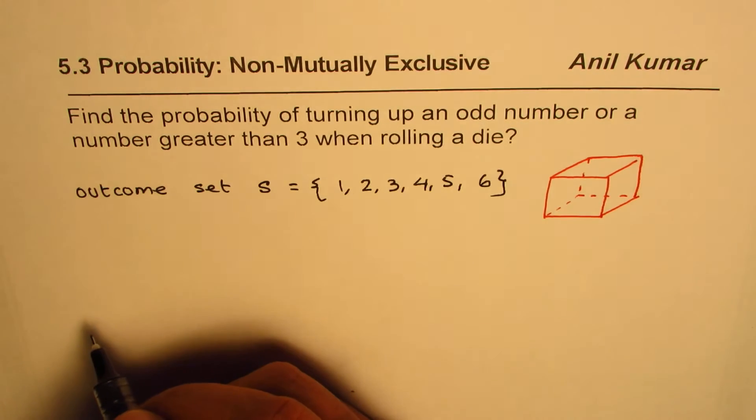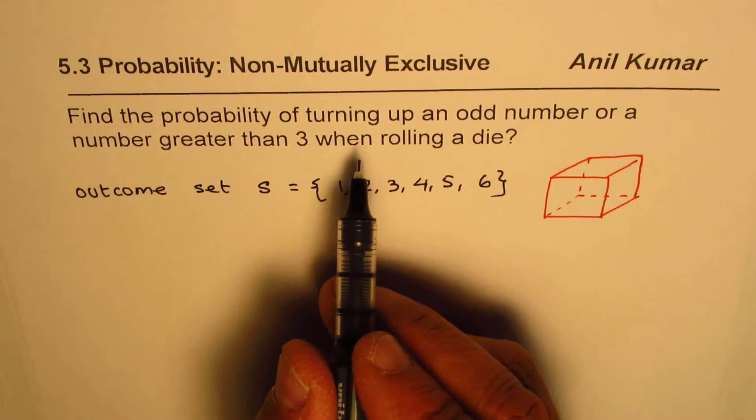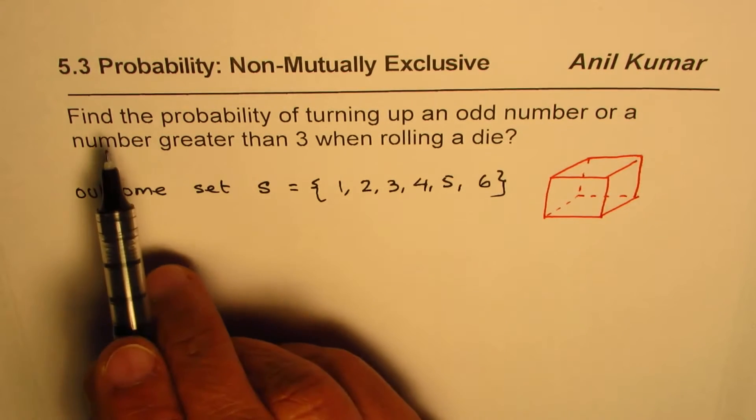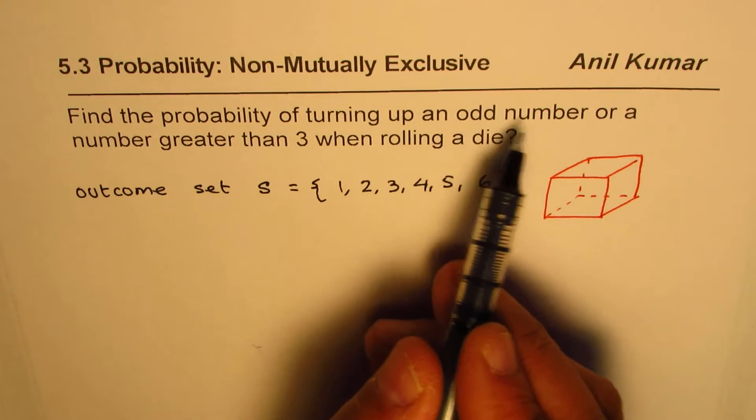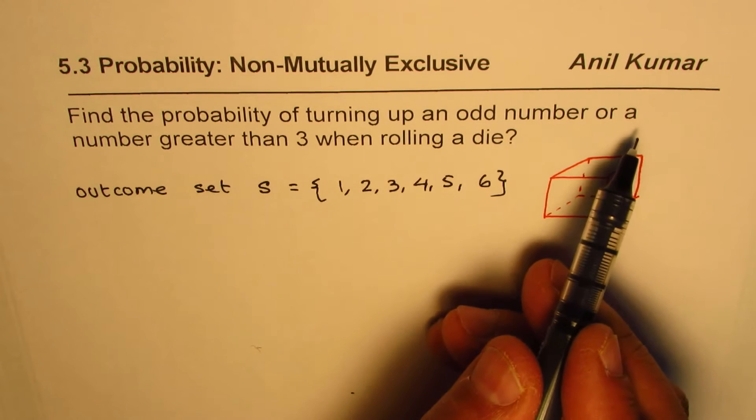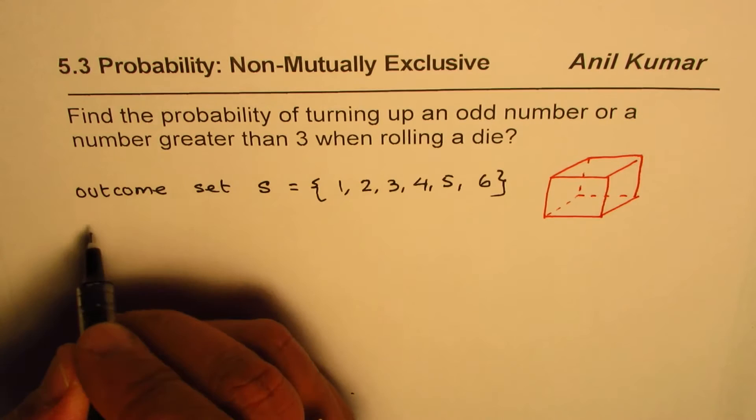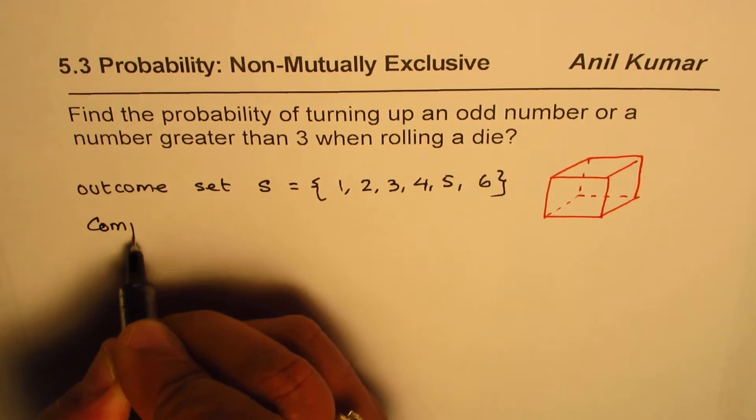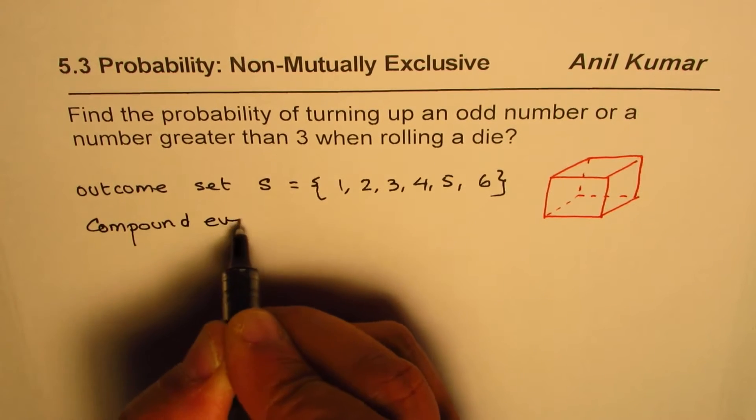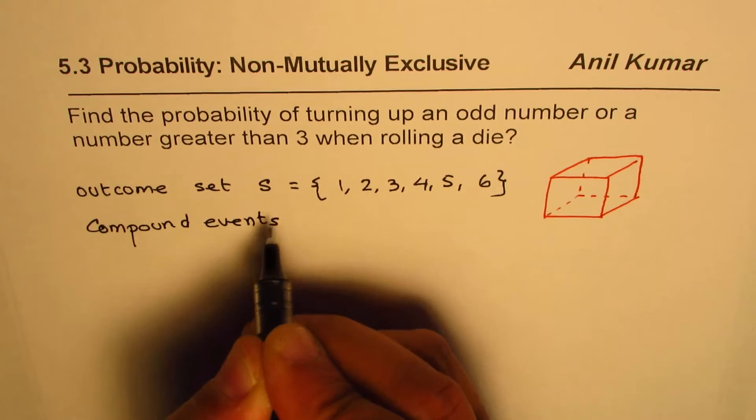Now what do we need? The event which we are defining is probability of turning up an odd number or a number greater than 3. So there are two events. So it is a compound event, right? So it is a case of compound events. We have more than one event.